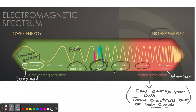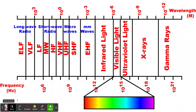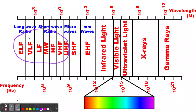Ultraviolet radiation — birds can see ultraviolet radiation. So let's look at all of these, one at a time. Let's start with radio waves. When we're talking radio waves, we're talking within this area — this is all radio waves.